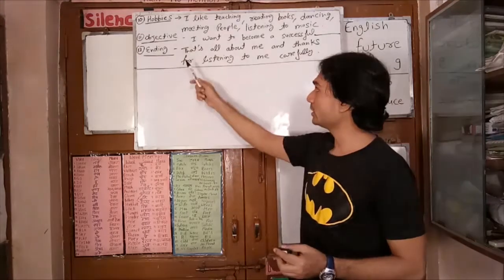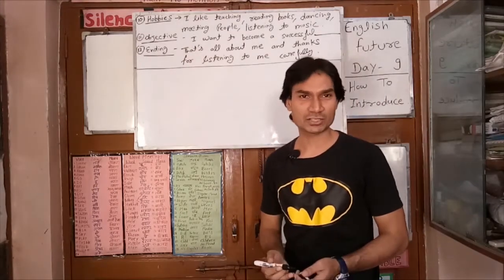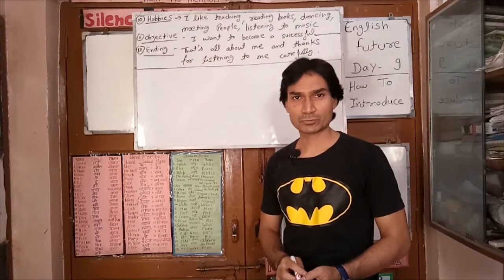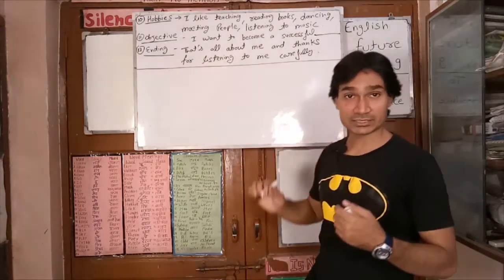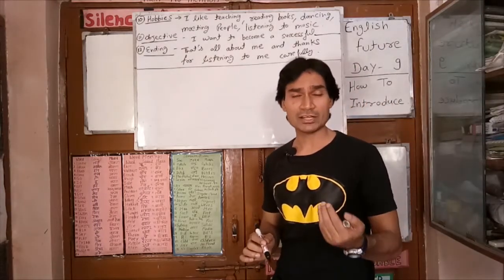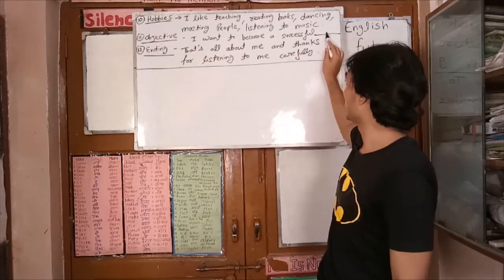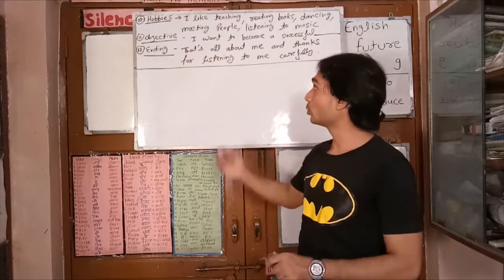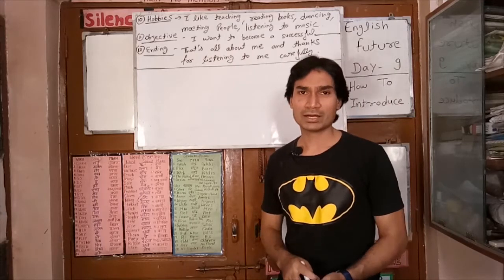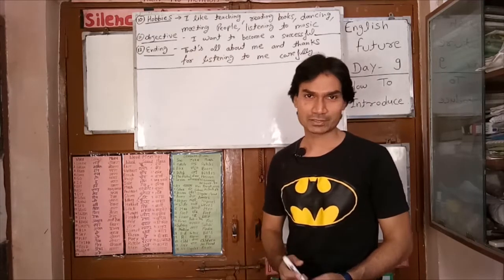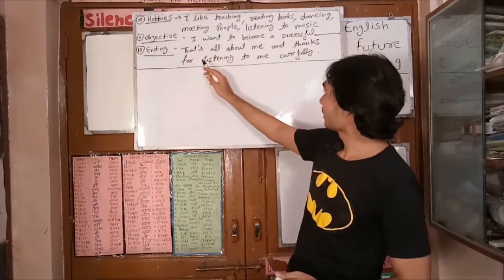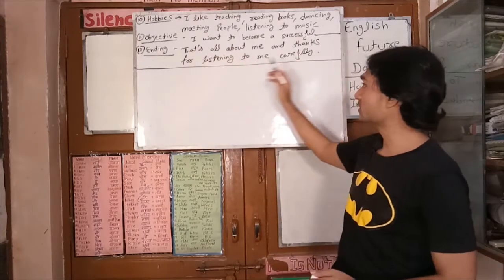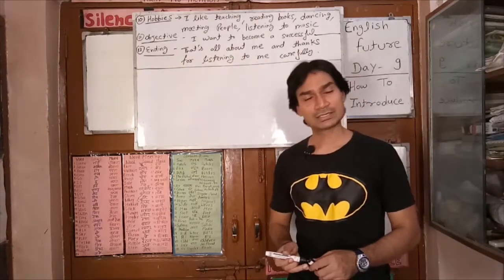The next point is your objective — what you want to do. You will start with 'I want to become successful.' For example, 'I want to become a successful, famous actor.' Then for the ending, you will say: 'That's all about me, and thanks for listening to me carefully.'